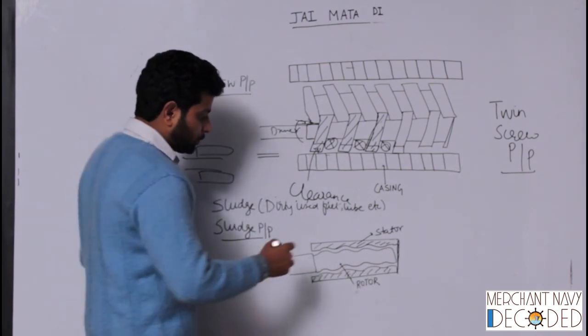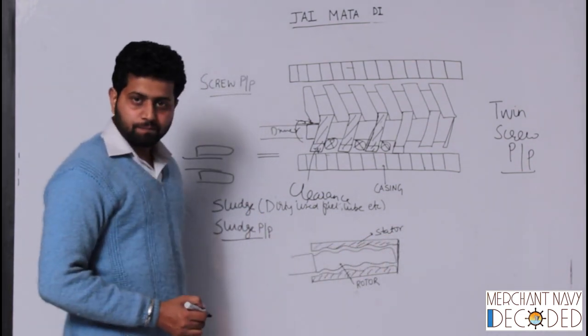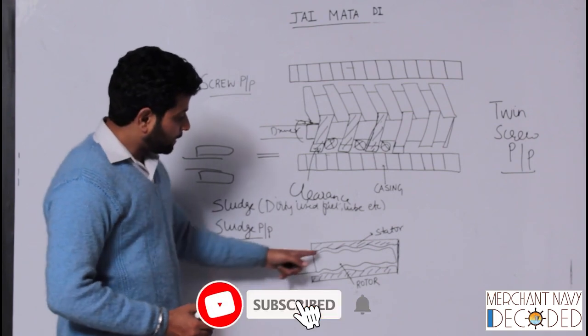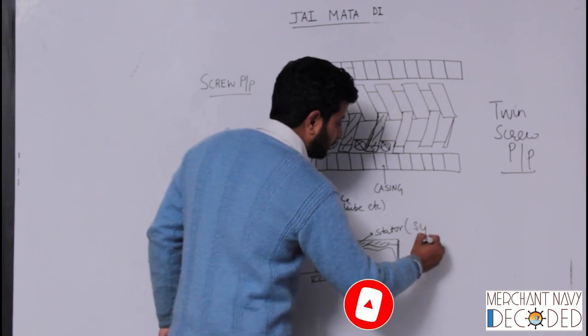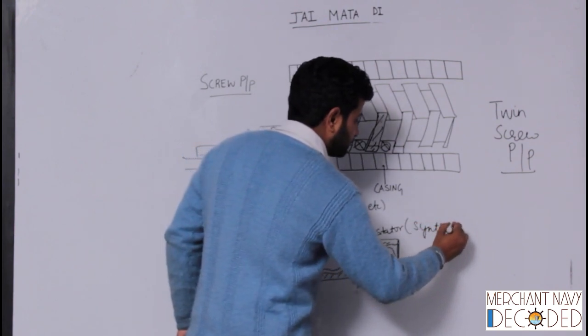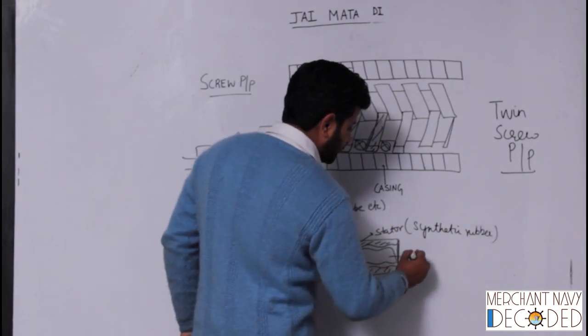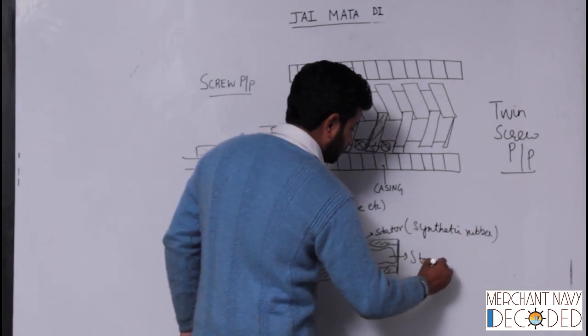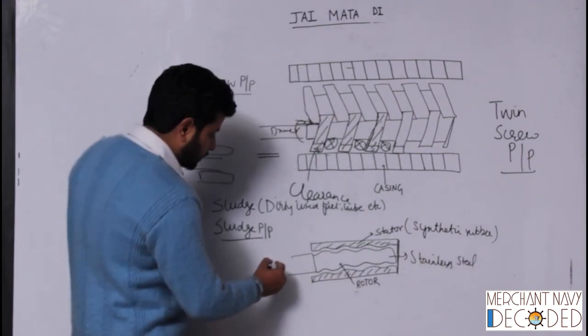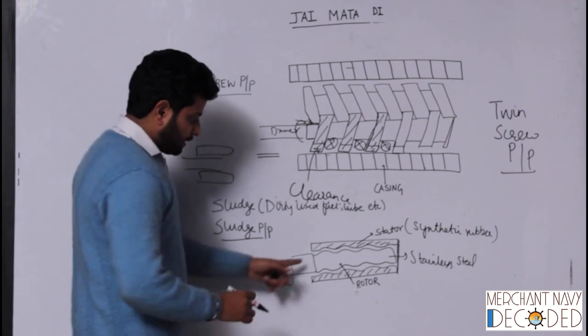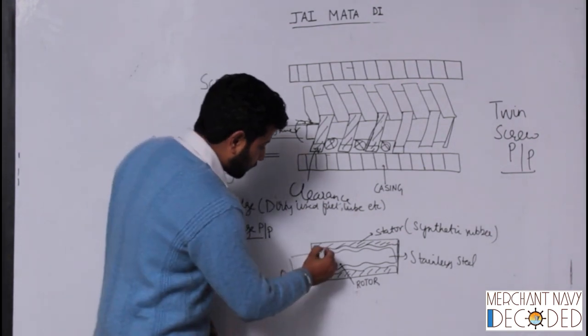And this sludge pump most of the times is a single screw pump. So what happens is we have got a stator which is in the curved form, and we have got a rotor over here. This stator is made of synthetic rubber, and this rotor is made of stainless steel.